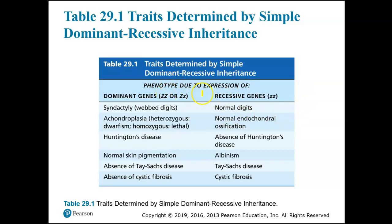This is a table of different traits inherited by dominant recessive inheritance. Webbed digits is dominant; normal digits is recessive. Syndactyly, or webbed digits, is actually a dominant trait. Achondroplasia — when a person is heterozygous they have dwarfism, and when they're homozygous it's lethal — is a dominant disorder. Huntington's disease is dominant. Normal skin pigment is dominant, whereas albinism is recessive. Tay-Sachs is recessive and cystic fibrosis is recessive.